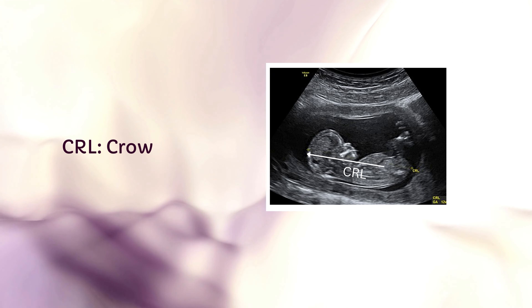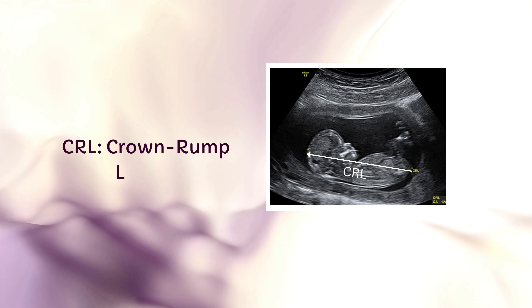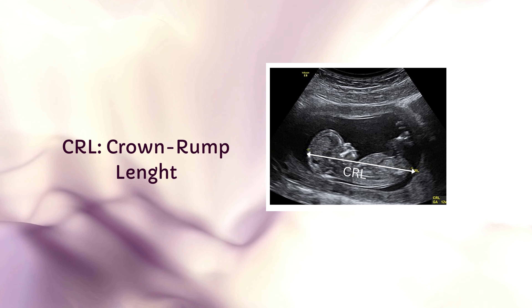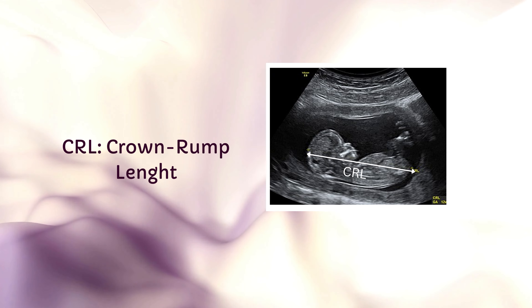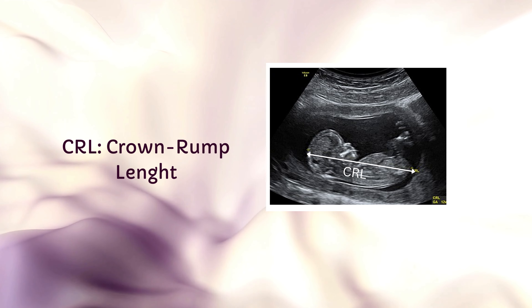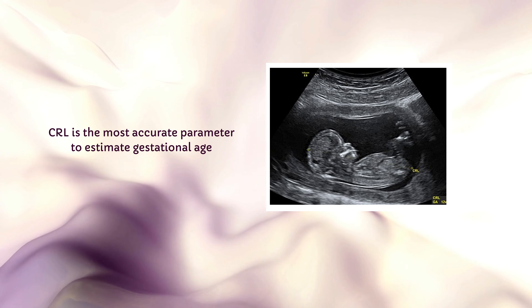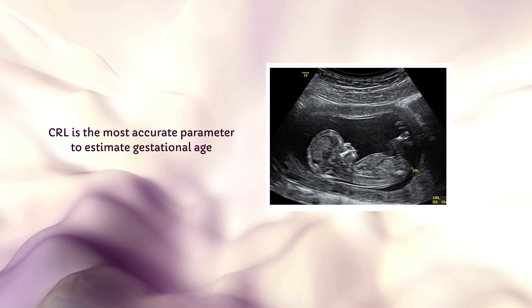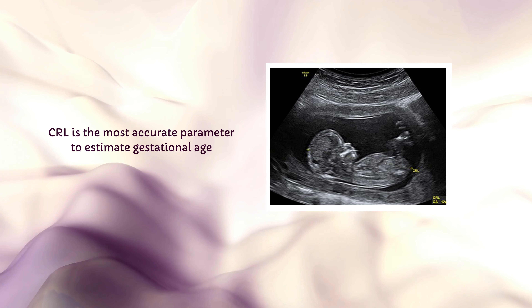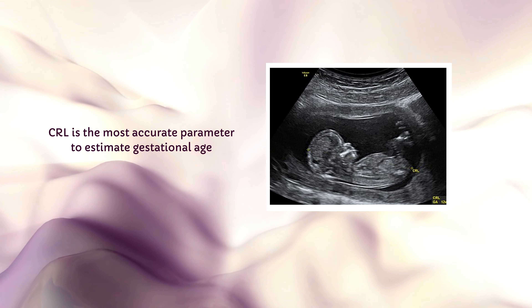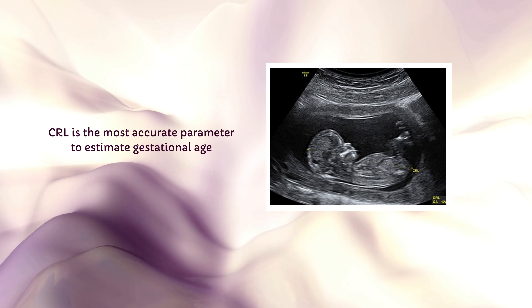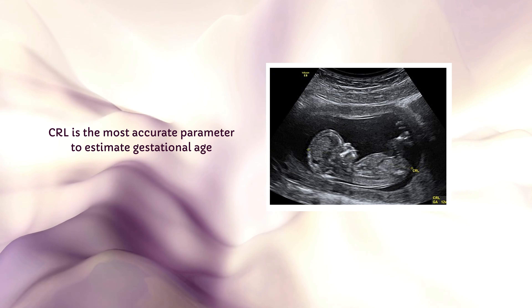Next, we have CRL, short for crown rump length. It measures your baby from the top of their head, crown, to the bottom of their buttocks, rump. It's used in early pregnancy to estimate your baby's age and expected due date. It's the best parameter to date a pregnancy.